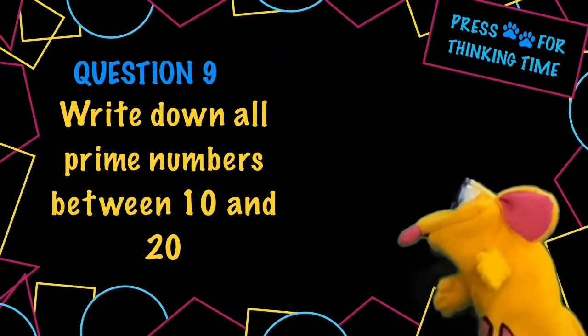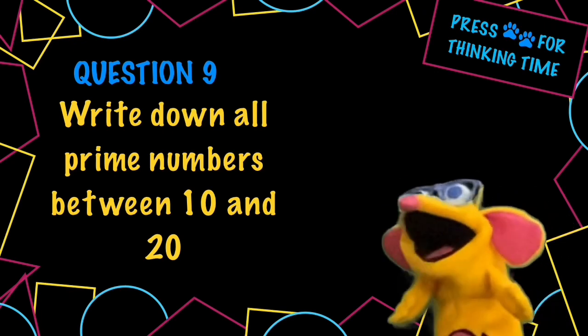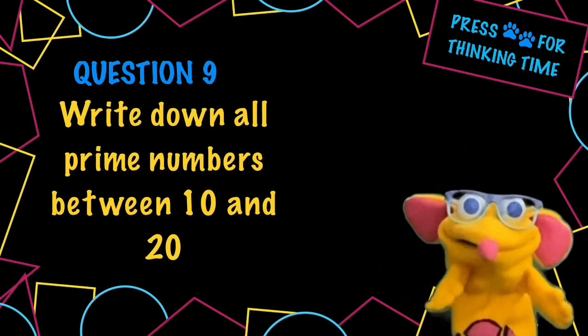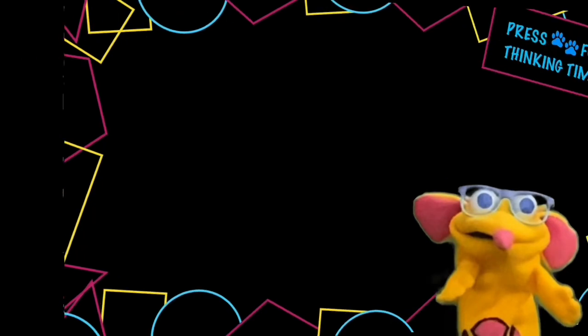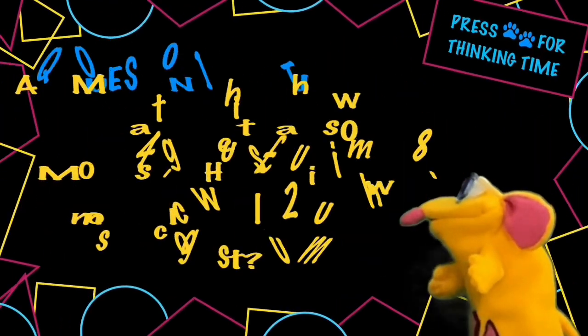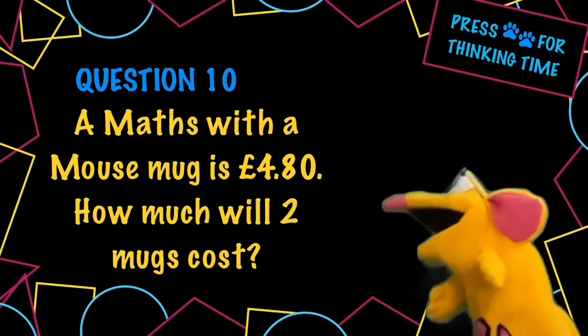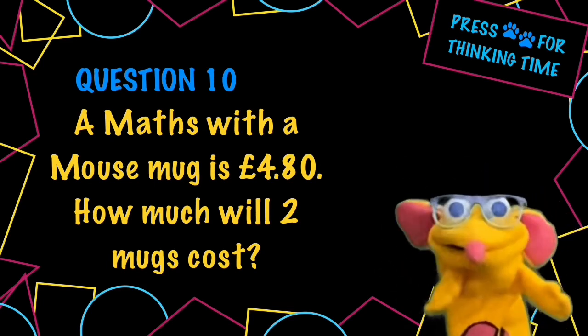Question nine, write down all prime numbers between 10 and 20. Question ten, a Maths with a Mouse mug is £4.80, how much will two mugs cost?